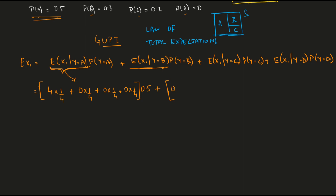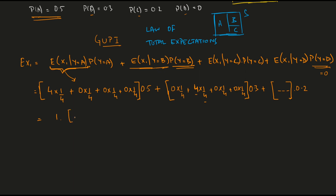The second bracket is her expected score if B is the correct option. The calculation is similar — when she chooses B she gets 4, and she chooses B with probability 0.25. So that bracket is also 1, multiplied by the probability of B being correct which is 0.3. Similarly the third bracket also equals 1, multiplied by 0.2. The D term is 0, so I won't write it. Each bracket equals 1, so summing: 0.5 + 0.3 + 0.2 = 1. So E[X1] for GUPY = 1.